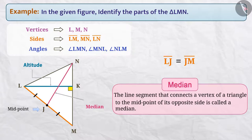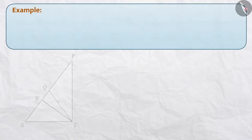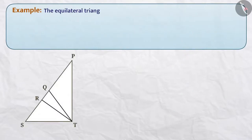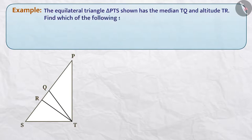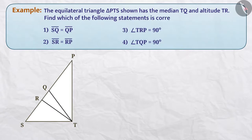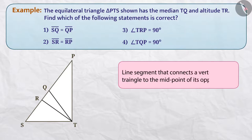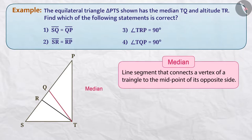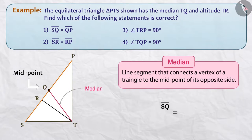In this way, we have identified the paths of triangle LMN. Next example: in the equilateral triangle PTS shown here, TQ is the median and TR is the altitude. Find which of the following statements is correct. Since the line segment TQ is the median, we can say that point Q is the midpoint of side SP. That is, SQ is equal to QP. This is explicitly stated in the first statement, so the first option is correct.